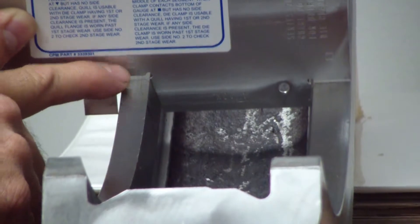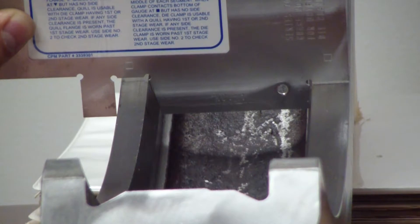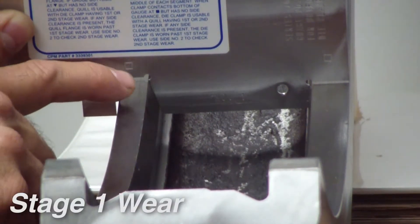As you can see on the gauge, there are squares stamped into the metal on the surfaces. If the flat surface below the square is up against the flat surface of the clamp on both sides, this indicates Stage 1 wear.